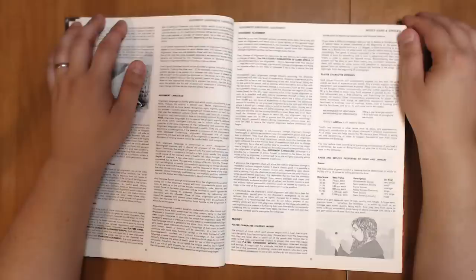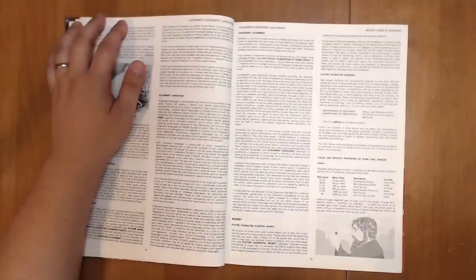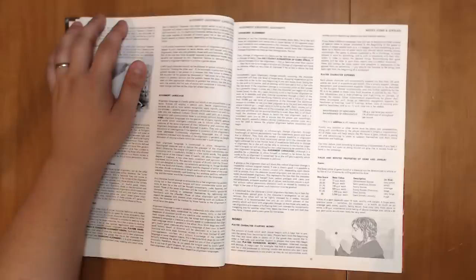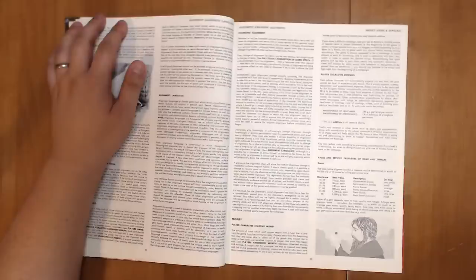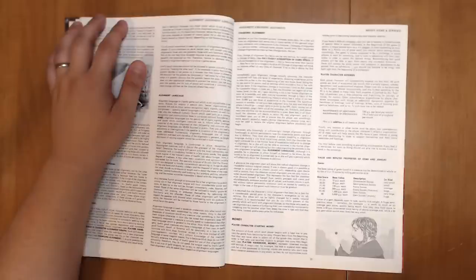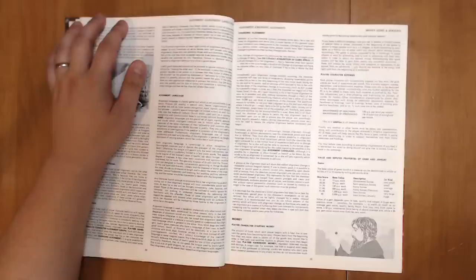Now, the question is, it seems to imply that you can only speak an alignment language if you are that alignment. I'm not sure how that is supposed to happen, though. Like, if you're a lawful good character, can you speak in the lawful evil alignment language? Would you know those terms, or how do you learn those terms? Right? That's the actual thing that I'm interested in here. How are these languages built into the world in a concrete sense?